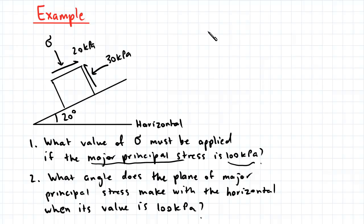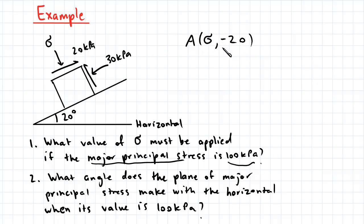So I'll go ahead and define two points. We have point A with coordinates sigma and negative 20 — this is negative 20 because the shear stress causes the soil element to want to turn clockwise. And we also have point B, which is 30 and positive 20.